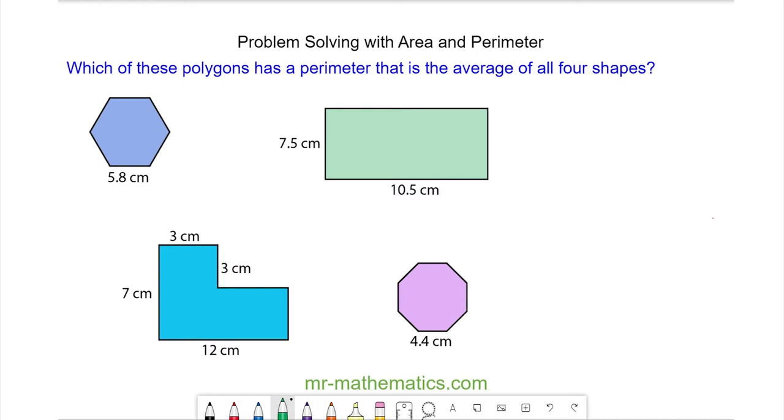The perimeter of a shape is the distance around the outside edge, and for this regular hexagon, we have six equal sides. So to work out this, we can do 5.8 multiplied by 6, which is 34.8 centimeters.